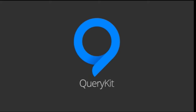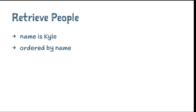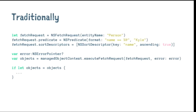After Swift was announced, I immediately started working on a library called QueryKit. It's a Swift DSL specifically for Core Data, which offers type-safe querying. So if we take a similar example — how would we perform a query for all the people named Kyle ordered by name? In Core Data, we'd have to write about six lines of code. You'd need to create an NSFetchRequest, a predicate, a sort descriptor, and perform the query. It's quite repetitive, and considering this simple operation can be described in a single English sentence, it's quite complicated.